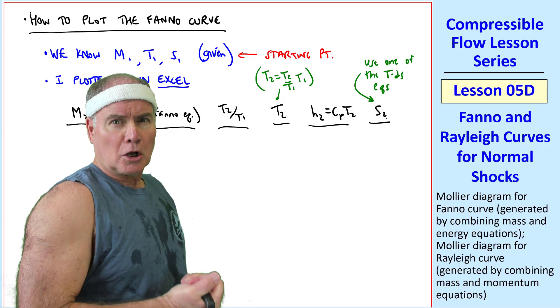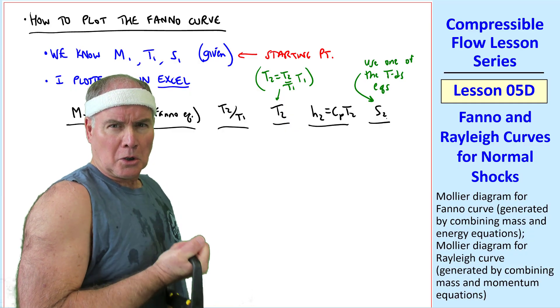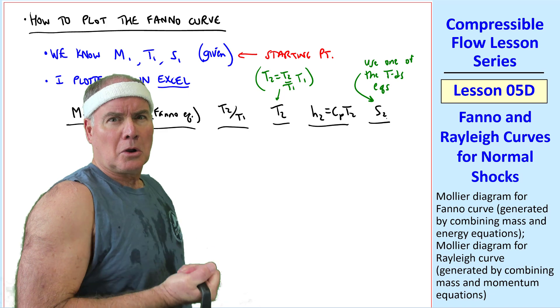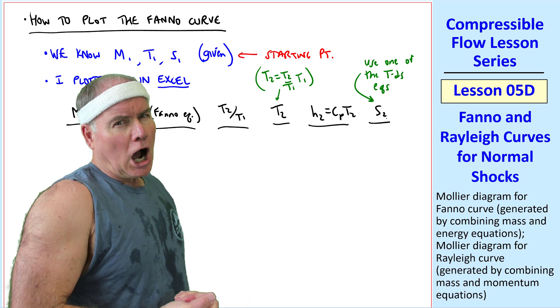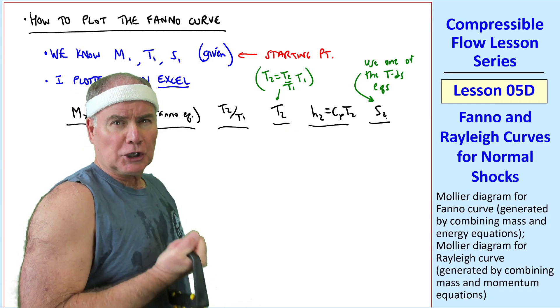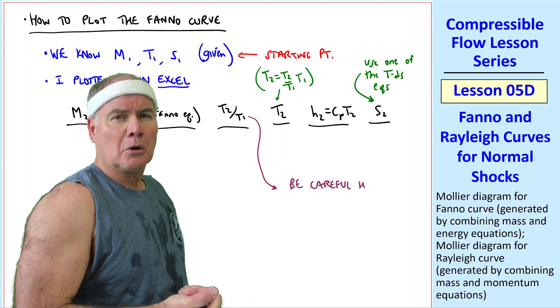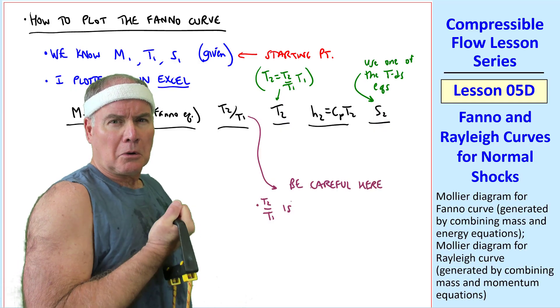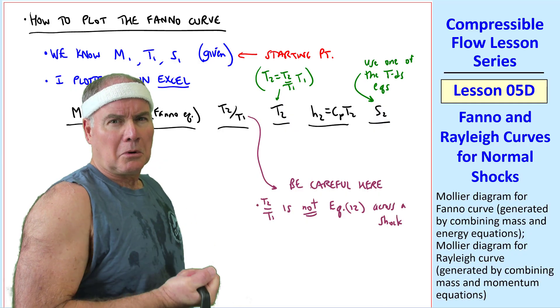Do we use your equation 12 to get T2 over T1? No Arnold, that doesn't work, because equation 12 is across a shock, but the Fanno curve is more general. Not all the points on the Fanno curve are across a shock. Then how do we get T2 over T1? Well, this is the part I'm leaving for homework. Be careful here.